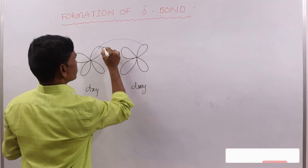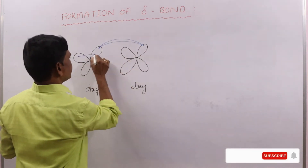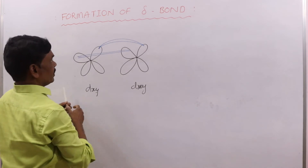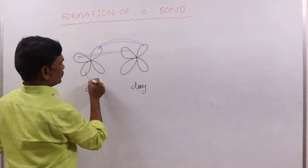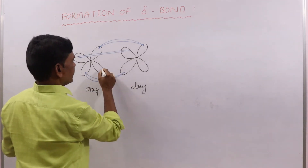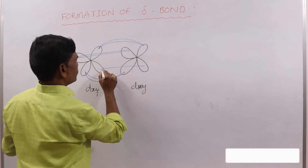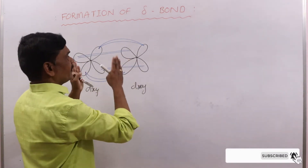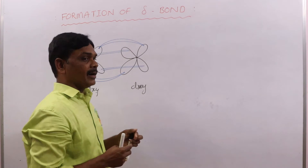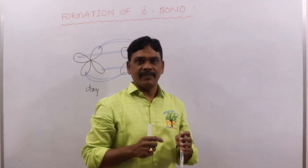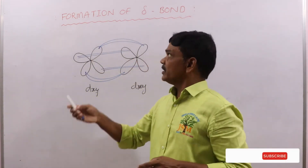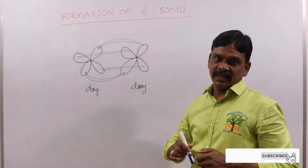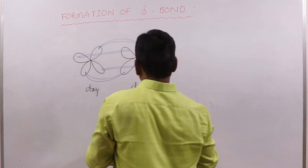This is the first lobe, and this is the second lobe. Here also the same — this is the third lobe, and this is the fourth lobe. So all four lobes of d orbital can overlap each other. That is known as delta bond.